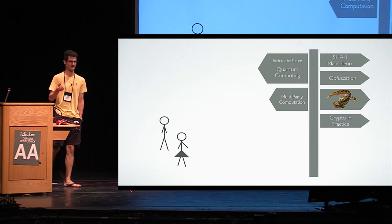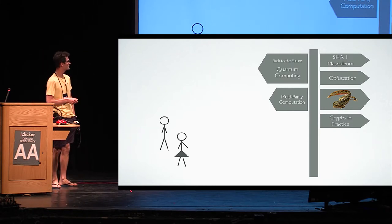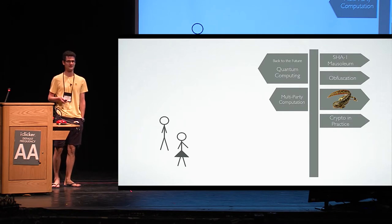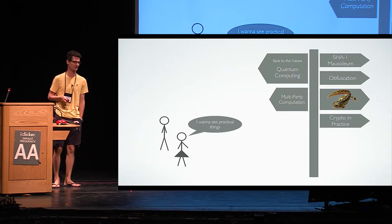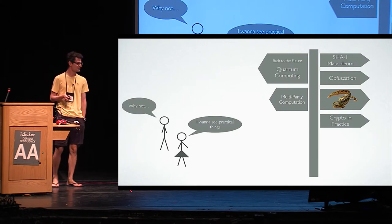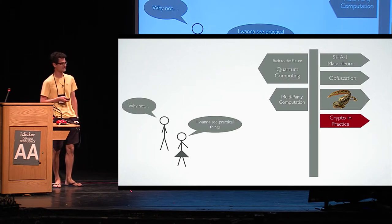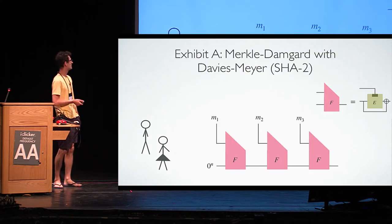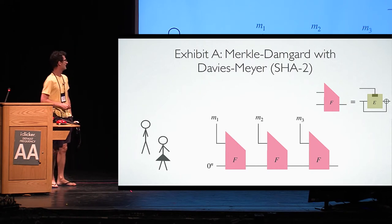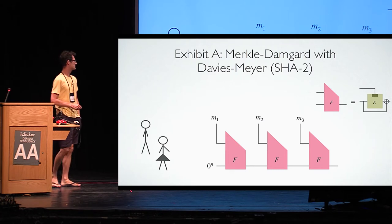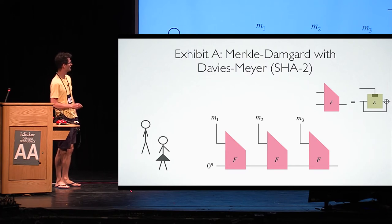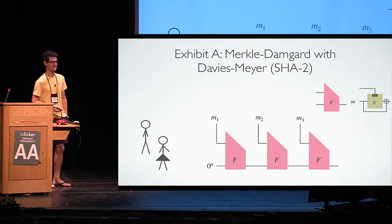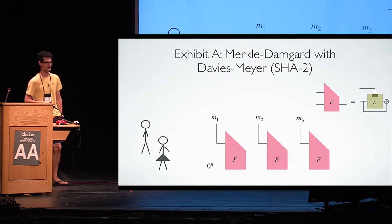They come to the directory and see all the cool exhibits. Alice decides she wants to see some practical crypto, and Bob agrees, so they end up going to the Crypto in Practice exhibition. The first exhibit they stop at is the Merkle-Damgård construction with the Davis-Meyers compression function: you take the top input and use it as a key for a block cipher, and the lower part is the input to the block cipher but also XORed to the output. This is the design paradigm underlying the SHA-2 hash function.